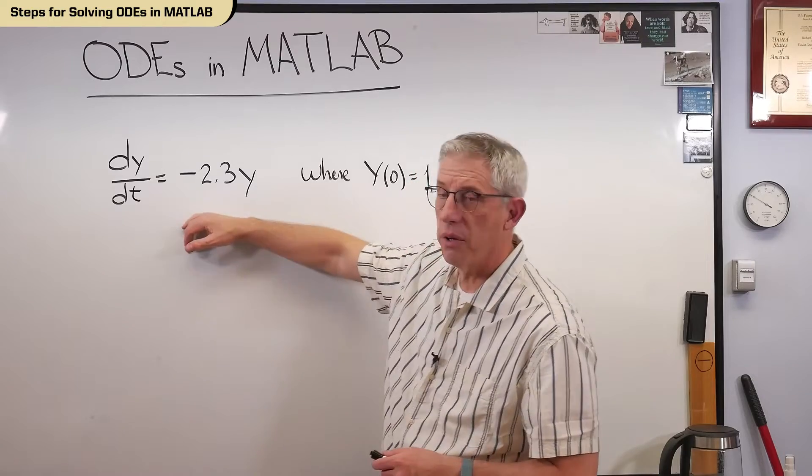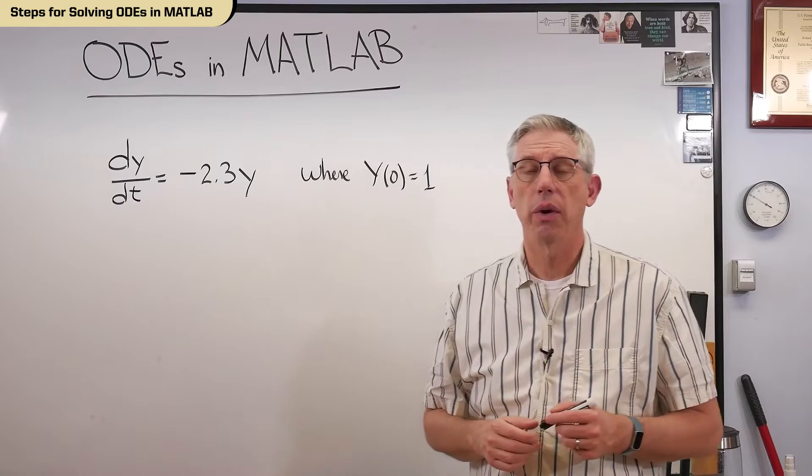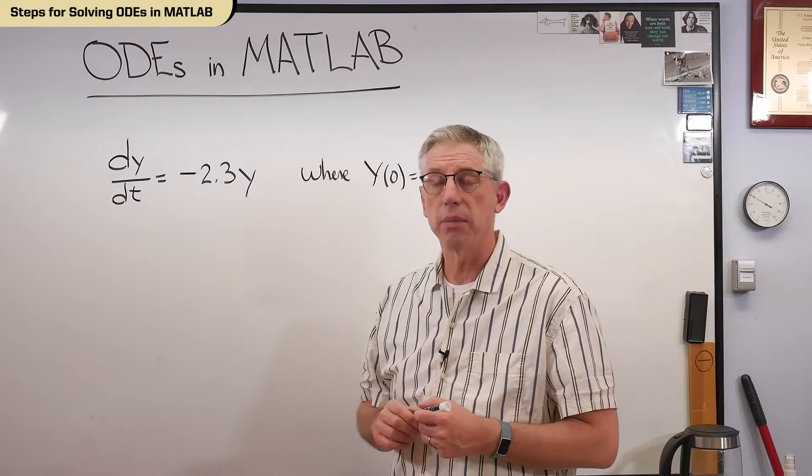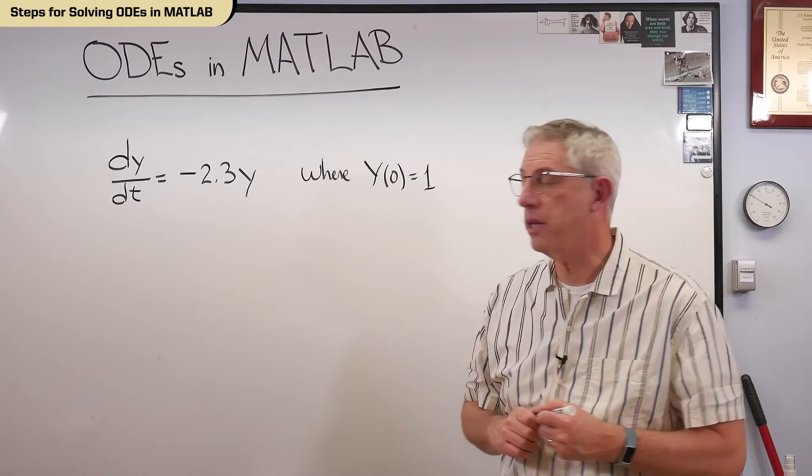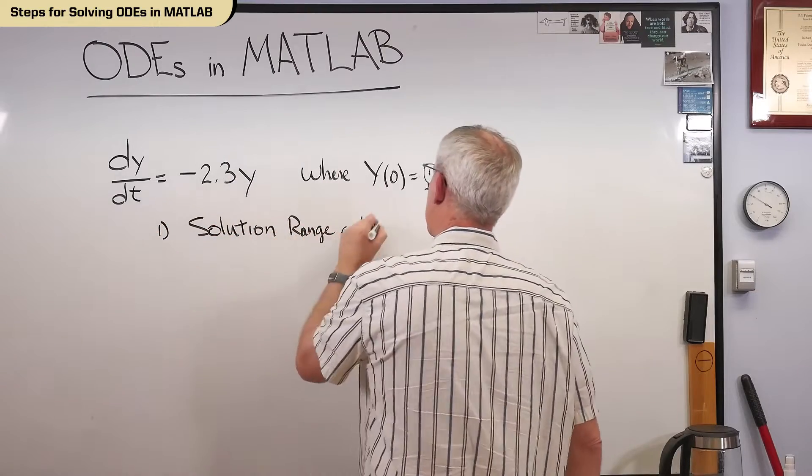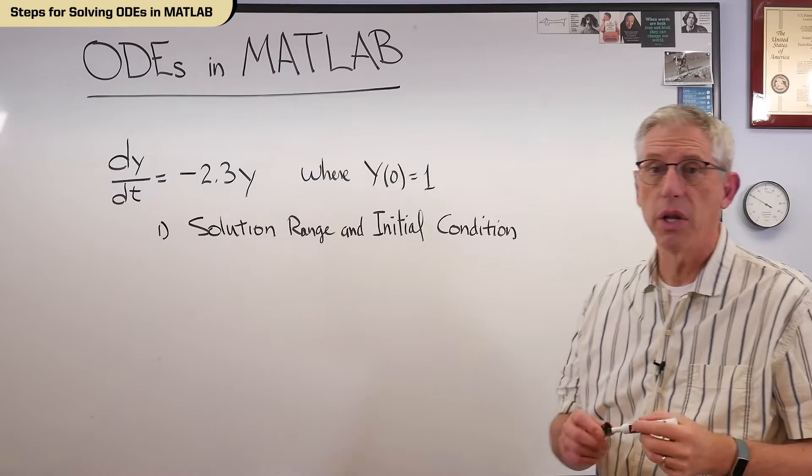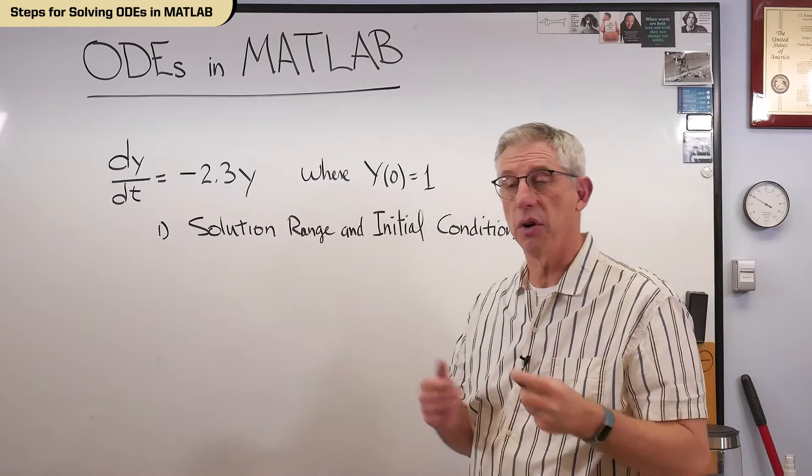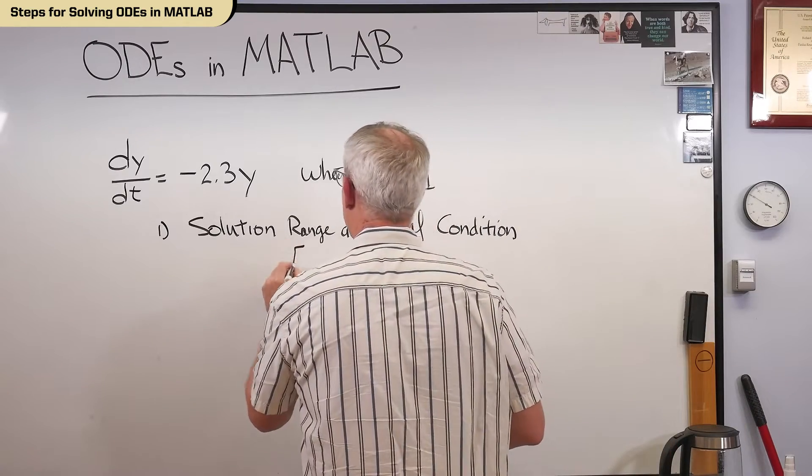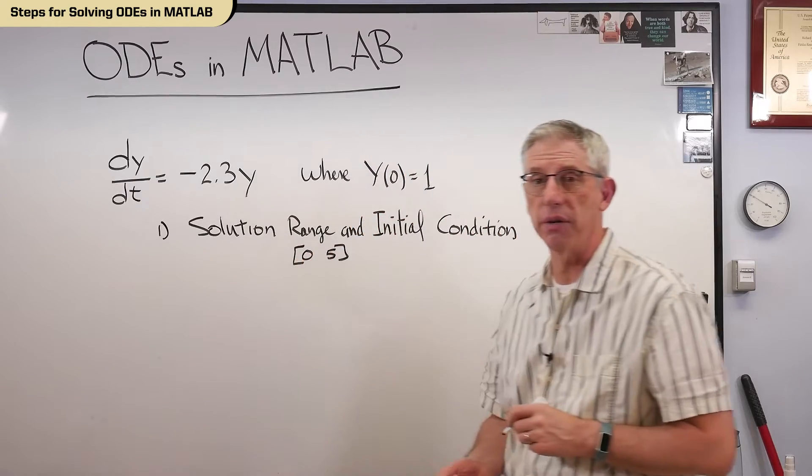So, got a differential equation, got an initial condition. There's three things you need to do in order to solve a differential equation in MATLAB. First thing you've got to do is specify the solution range and the initial condition. That means that we're going to solve for t0 to t1, whatever that is. Now, in this case, I'm going to solve for the range 0 to 5. So, 0 seconds to 5 seconds. That's step one.